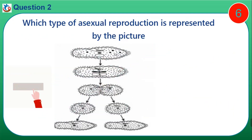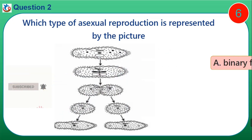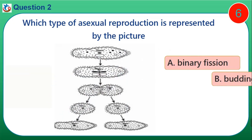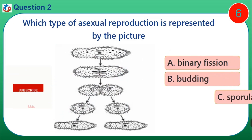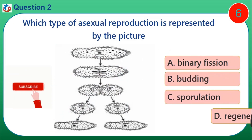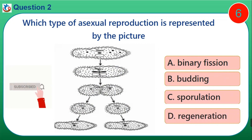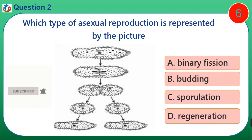Question 2. Which type of asexual reproduction is represented by the picture? A. Binary fission. B. Budding. C. Sporulation. D. Regeneration.